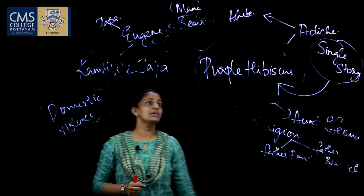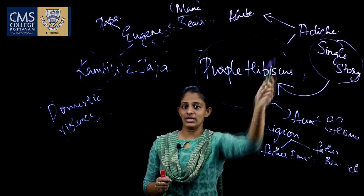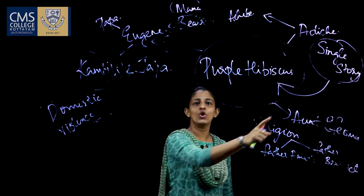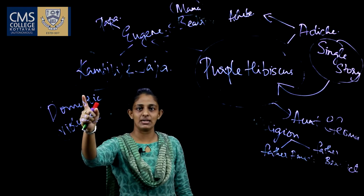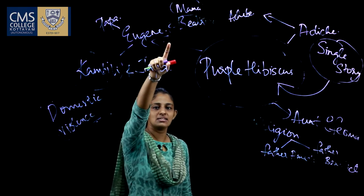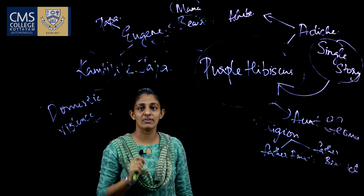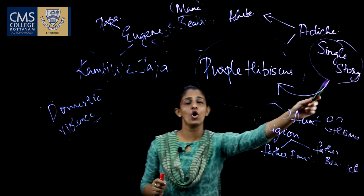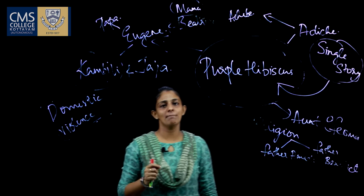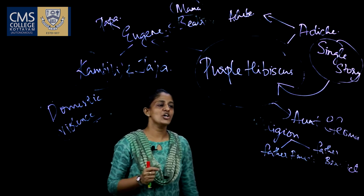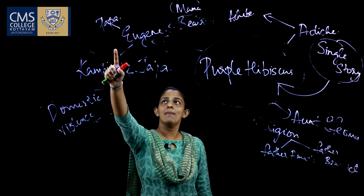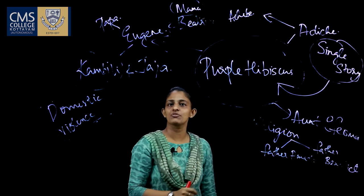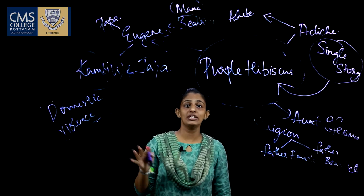But remember, Adichie did not believe in a single story. As a result, she did not want to say that women were completely suppressed — they did have voices. And as a result, you can see that Beatrice reciprocates at the end of the novel. She is breaking off the single story and bringing about multiple perspectives as well. Religion is one aspect where Papa is totally conventional, but he is totally for the society — people love him so much that they look up to him.